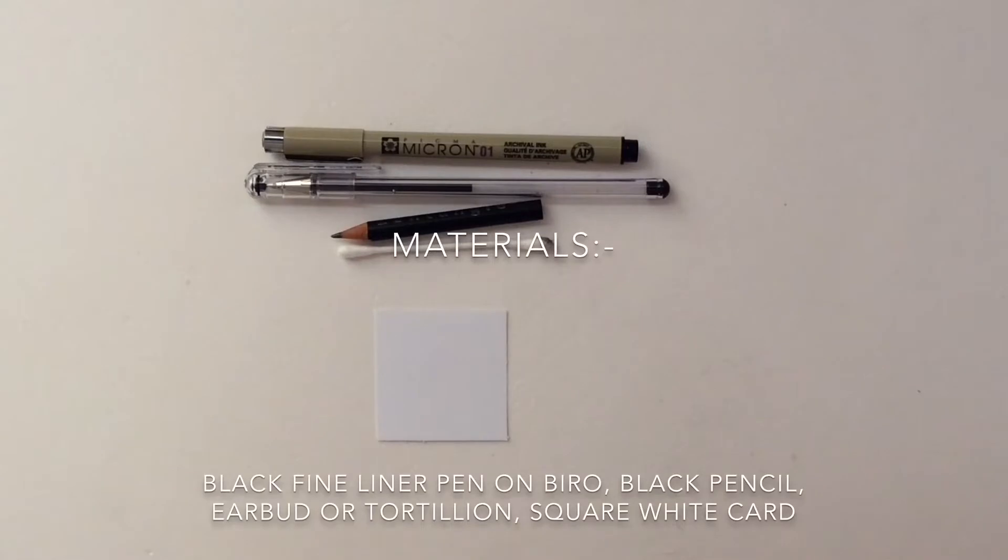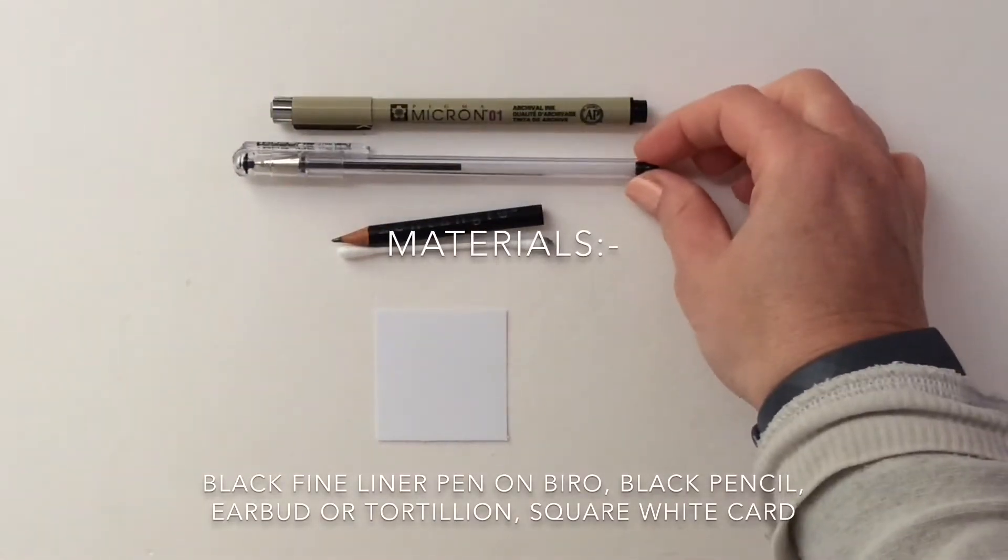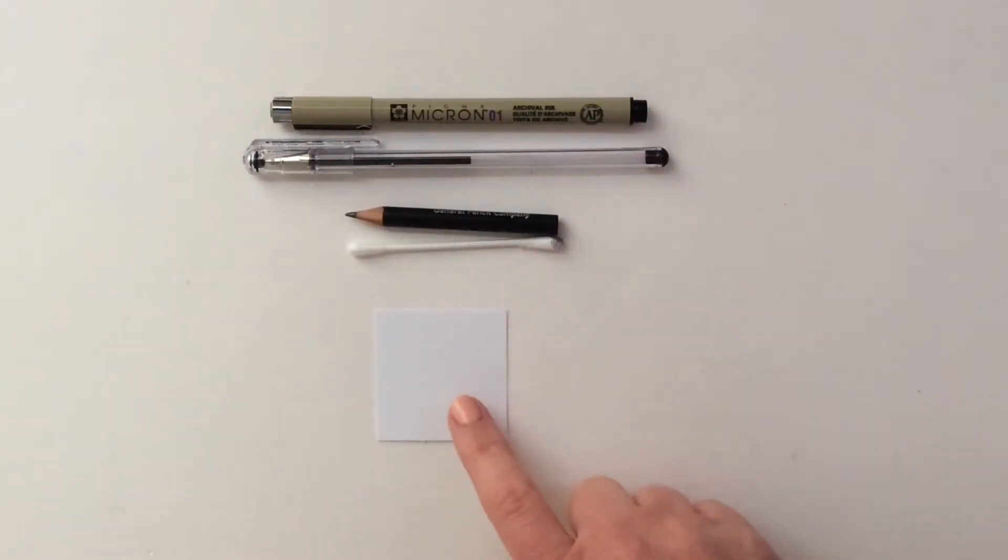The materials we're going to need are a black micron pen, if you don't have one a black biro, a black pencil, an earbud, and a square piece of card. And for those asking, this is a five centimeter by five centimeter square.